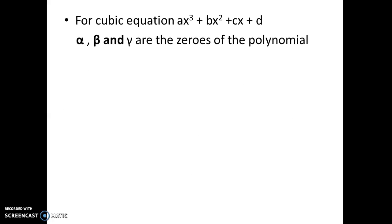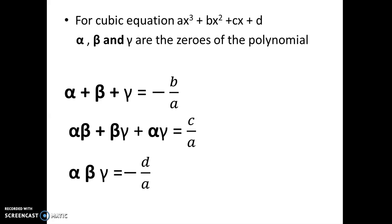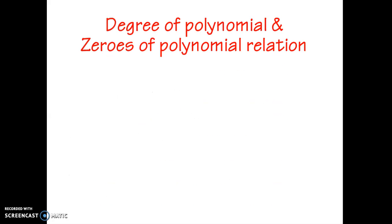Next, we will see for cubic equation. For cubic equation ax cube plus bx square plus cx plus d equal to zero, alpha, beta and gamma are the zeros of the polynomial. Then alpha plus beta plus gamma equal to minus b upon a. Alpha into beta plus beta gamma plus alpha gamma equal to c upon a. Alpha beta gamma equal to minus d upon a.